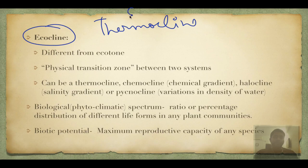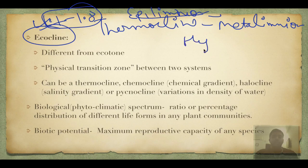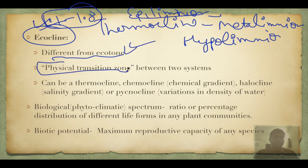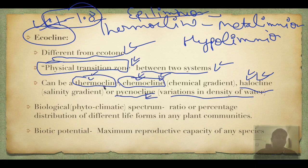Ecocline is different from ecotone. Recall epilimnion (topmost layer), metalimnion (thermocline — rapidly falling temperature in a lake), and hypolimnion (no gradient). Ecocline is a physical transition zone, short and between two systems. It can be a thermocline, chemocline (chemical gradient), halocline (salinity), or pycnocline (density varies). Pycno means density, halo means salinity, chemo means chemical, thermo means temperature — these are gradients, hence called ecocline.